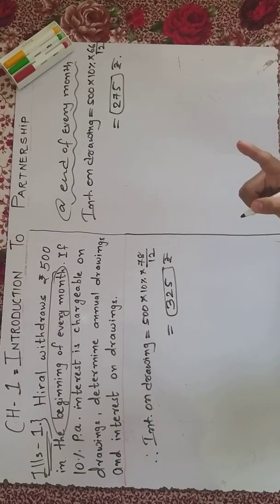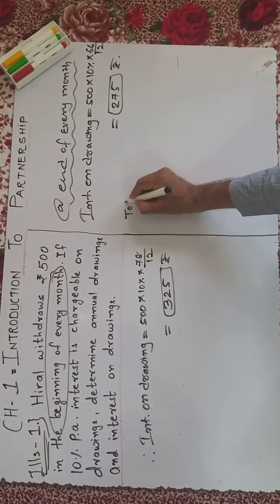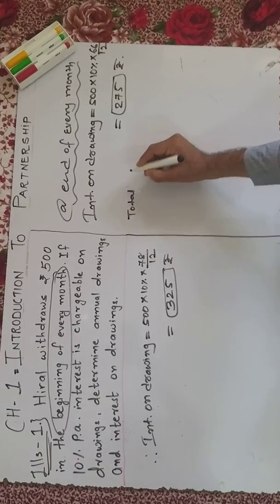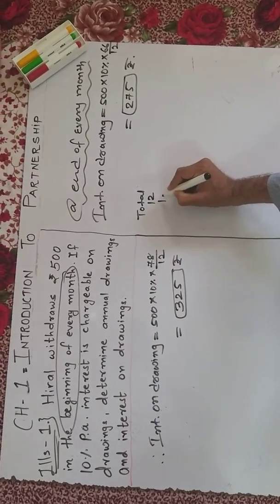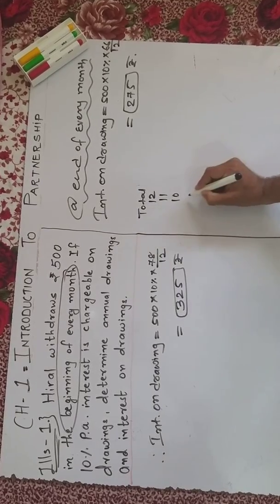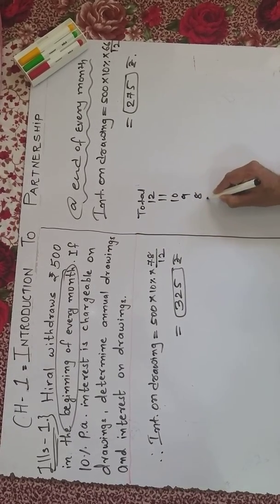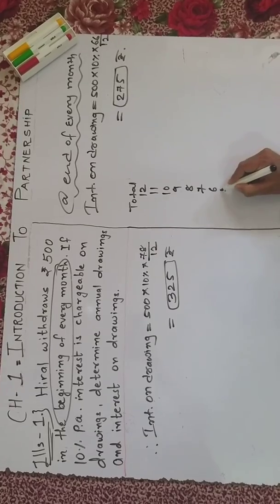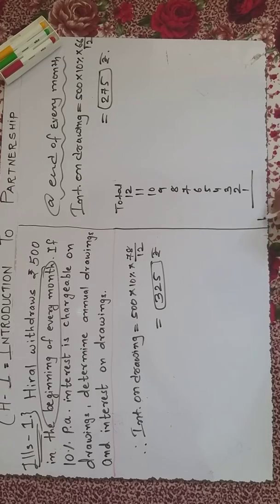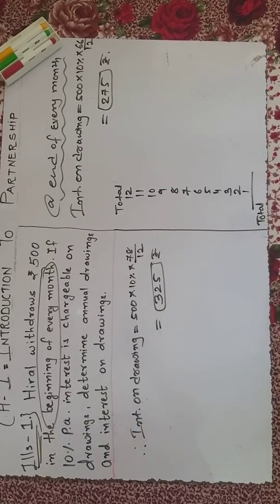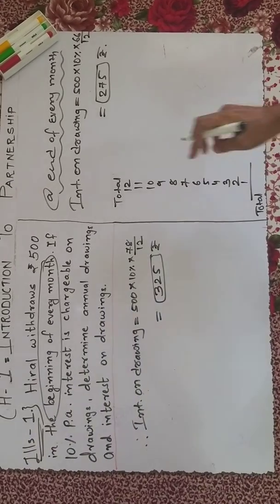Let me explain. At the beginning of every month means the first day of each month. We count the total months. On the first day of each month: 12, 11, 10, 9, 8, 7, 6, 5, 4, 3, 2, 1. If we total this for each month's first day...